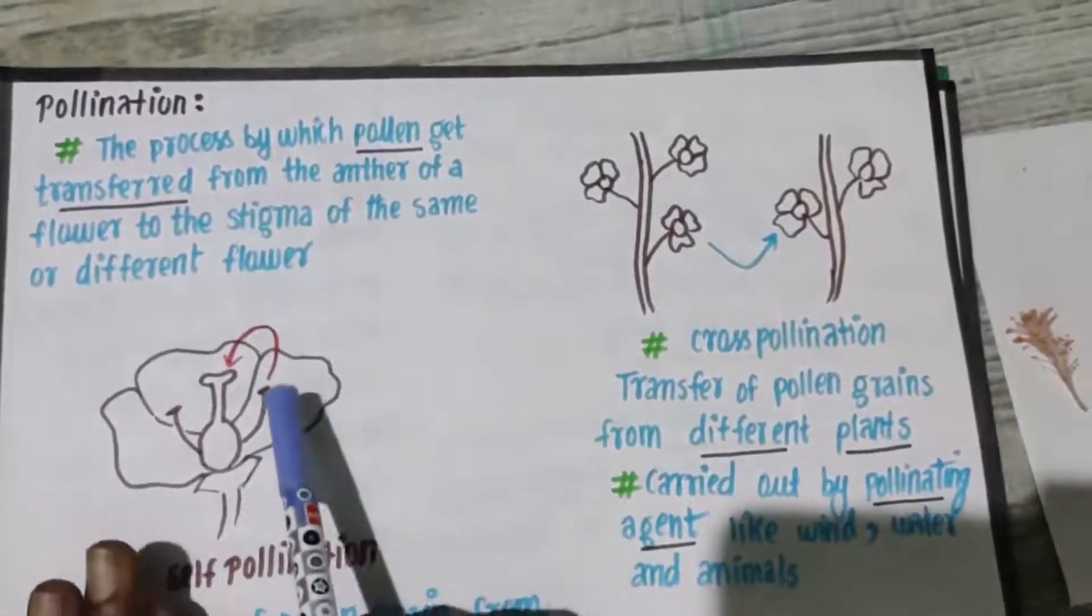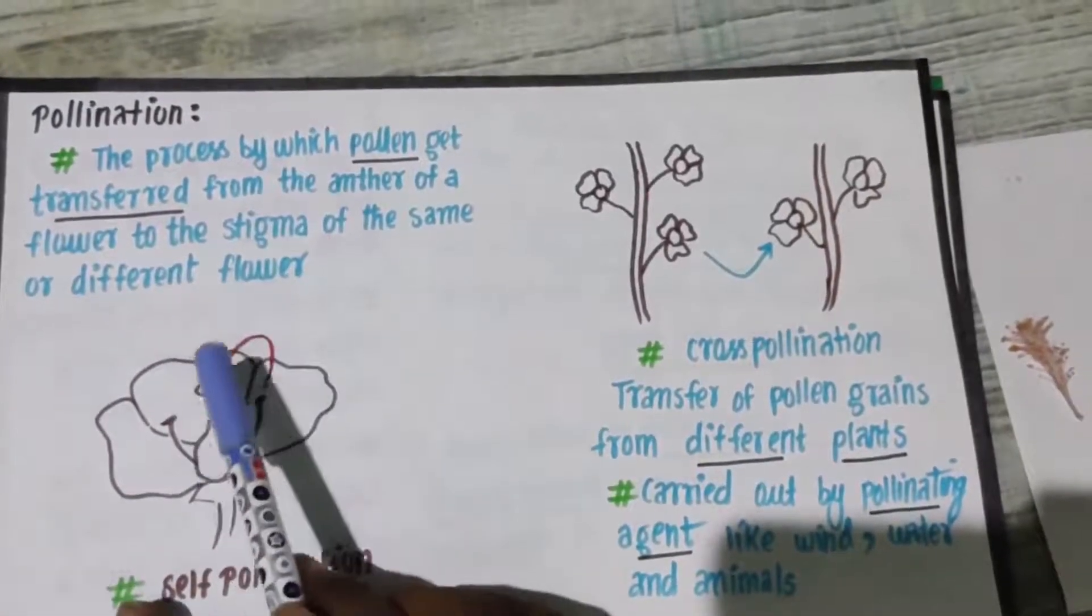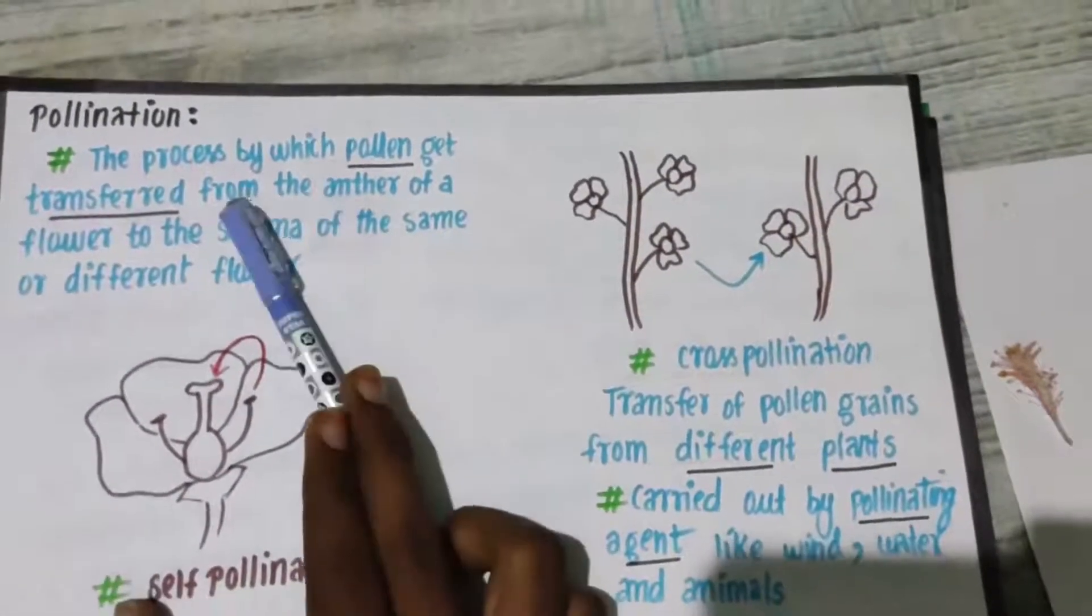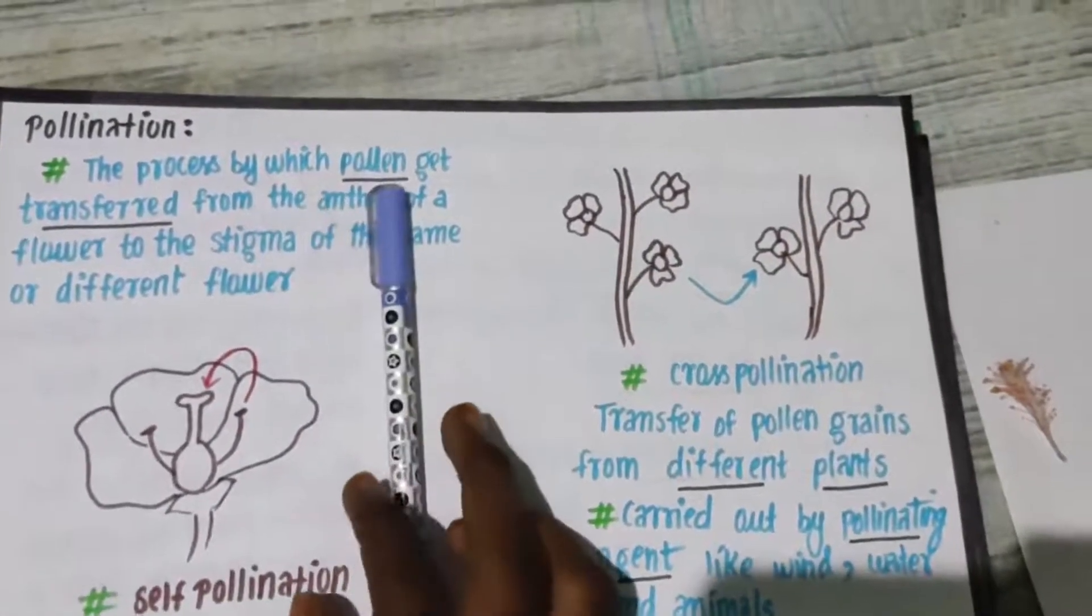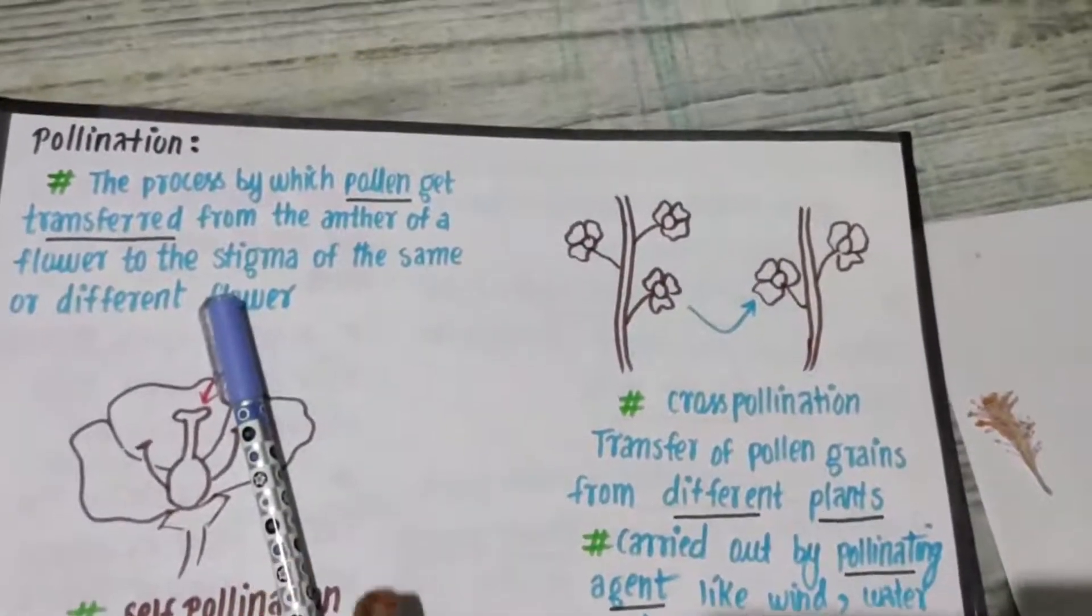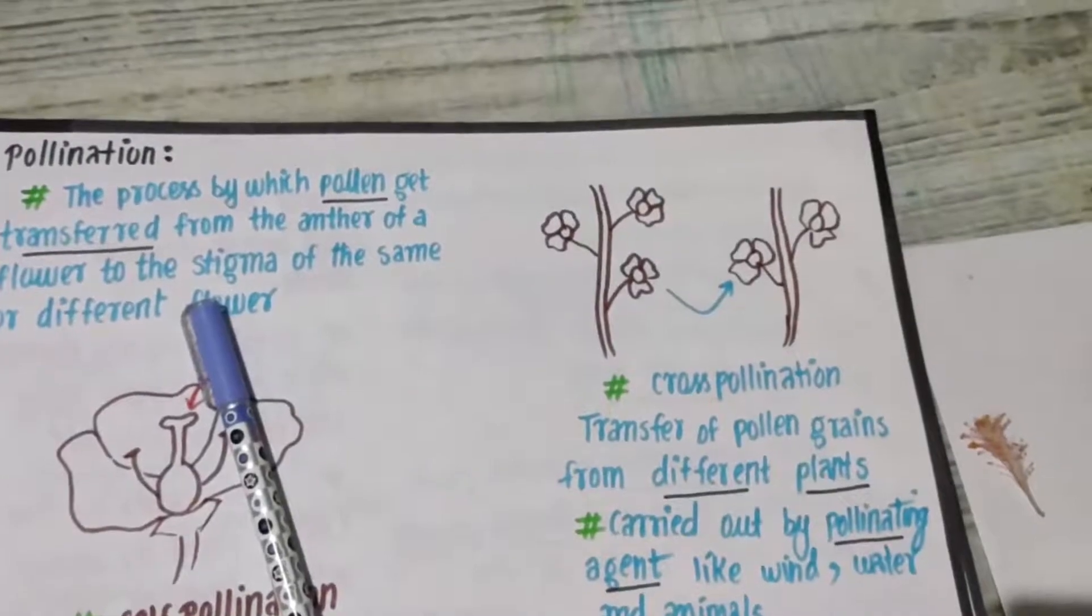So pollen moves from anther to stigma in the process of pollination. Just write this definition: Process by which pollen gets transferred from anther of a flower to the stigma of the same flower. That is what you call pollination.